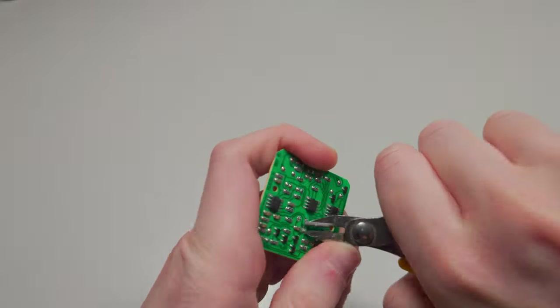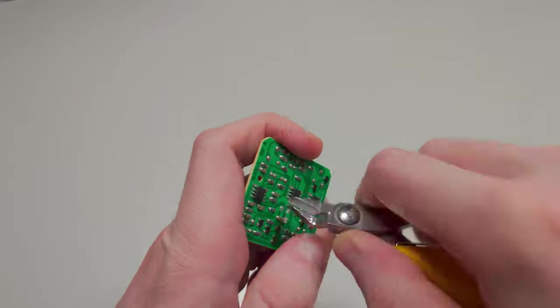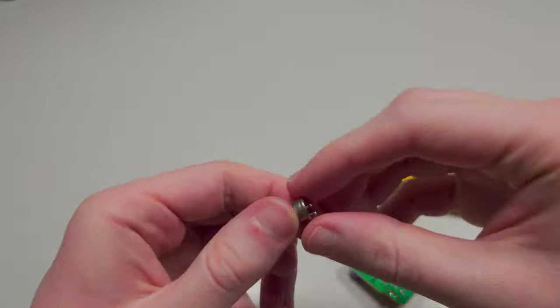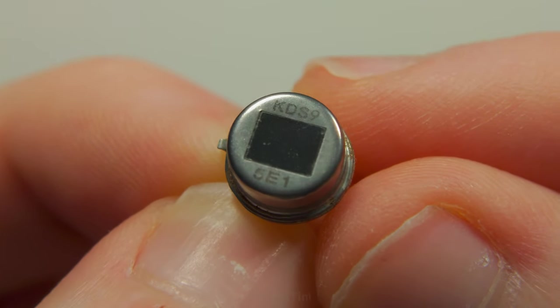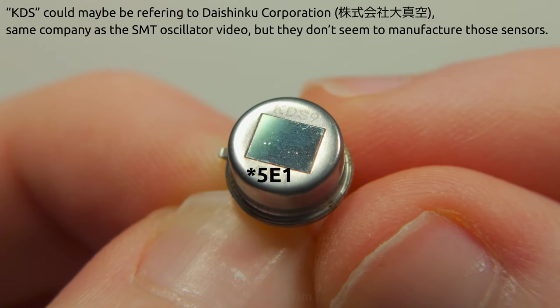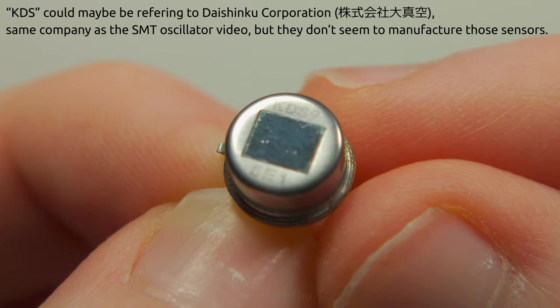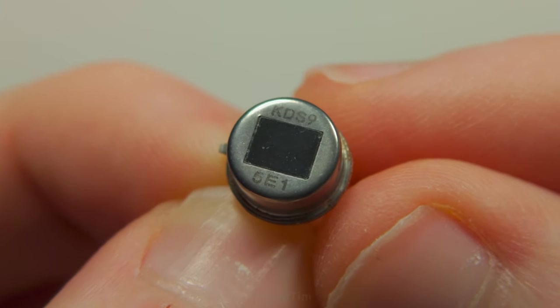First of all, just cut off the metal can from the PCB, we can just rip it off with some side cutters, don't need to be careful about this PCB. And here is the actual sensor, it's marked KDS9E51 and it has this nice little window, which is probably made of silicon to pass the long wave infrared.